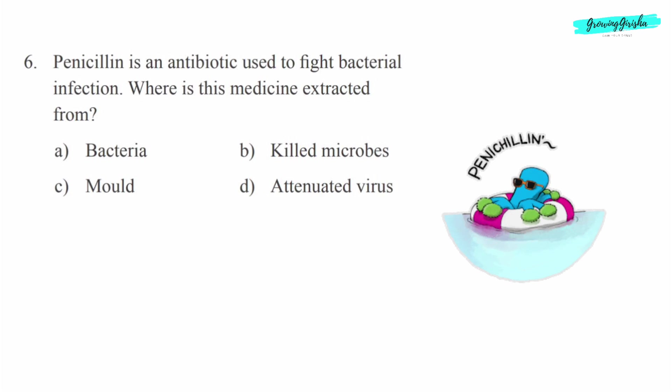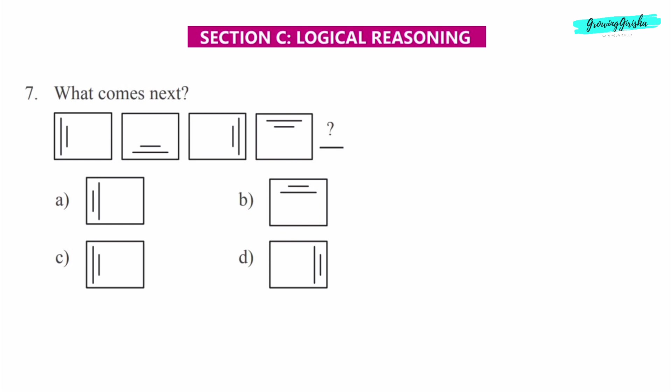Option C, mold. Section C: Logical Reasoning. Question 7: What comes next? See, the first square the lines are on the left side, then in the second square the lines are on the bottom side.